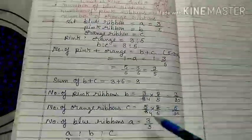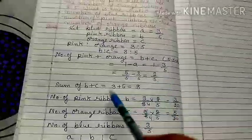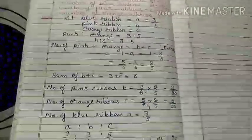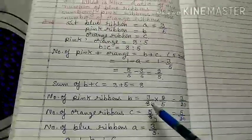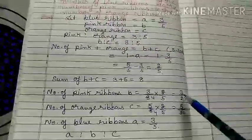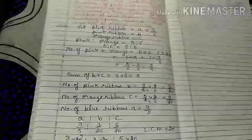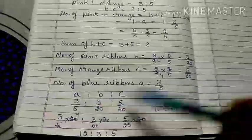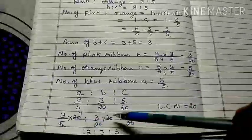Now we have: blue = 3/5, pink = 3/20, orange = 5/20. To express as a ratio without fractions, find the LCM of denominators (5 and 20), which is 20. Multiply each fraction by 20: blue = 12, pink = 3, orange = 5. Therefore the ratio of blue:pink:orange = 12:3:5.